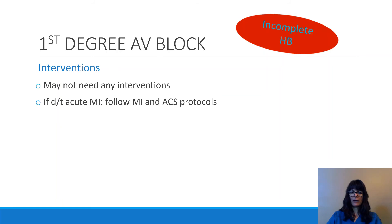For interventions in first-degree AV block: if the patient is asymptomatic, we may not need any intervention. But if there's an acute MI, we certainly need to act on that. Every hospital will have MI and acute coronary syndrome protocols to follow, and the usual end goal is to get the patient to the cath lab for an angiogram to assess the extent of the blockage.